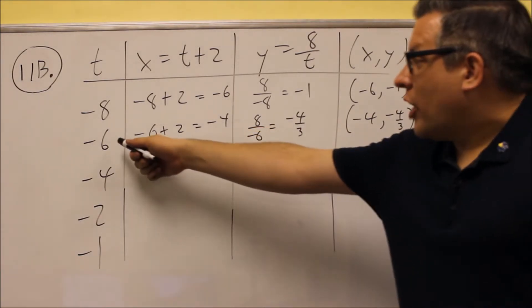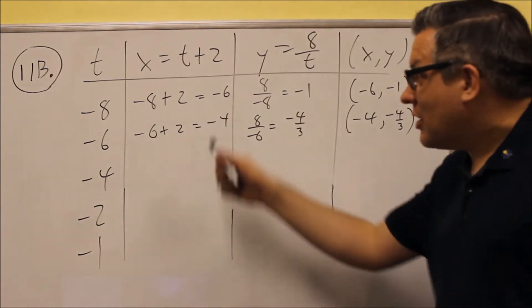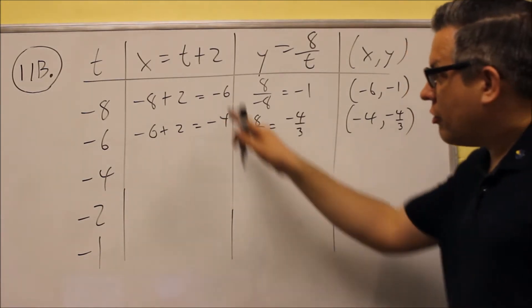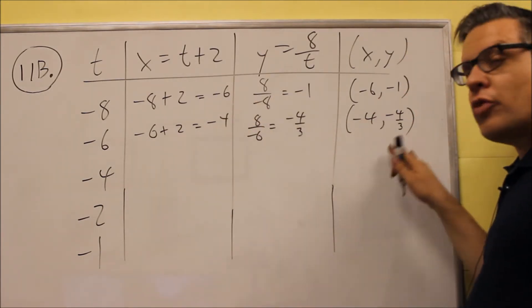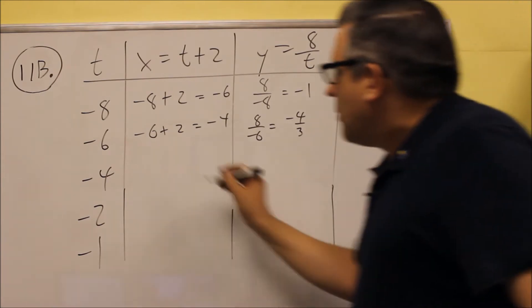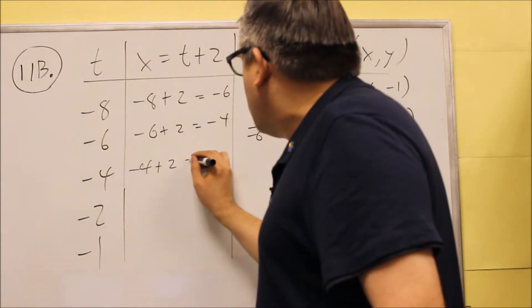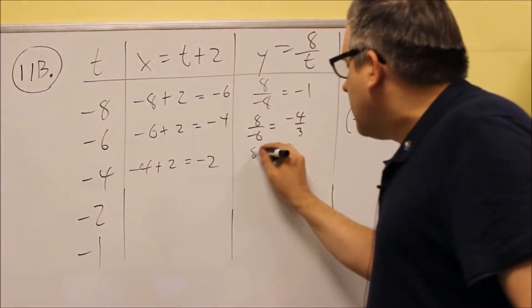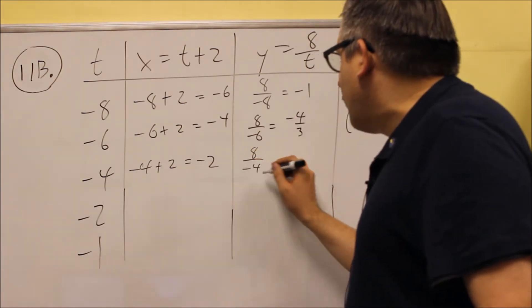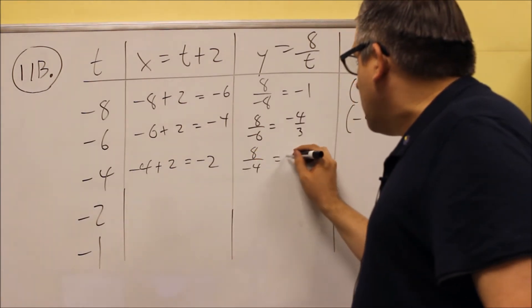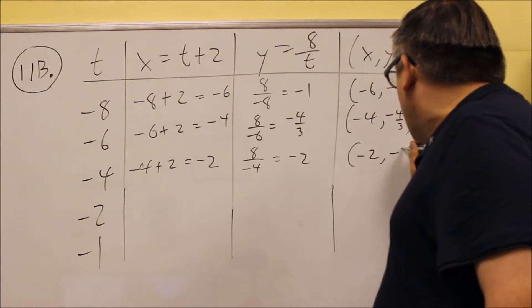It's really easy to accidentally grab the value for t instead of the value for x. So make sure you're using x and y values when you write your points down here. Next one, negative 4 plus 2 is negative 2. 8 divided by negative 4, the t value, is negative 2. So we get negative 2 and negative 2.